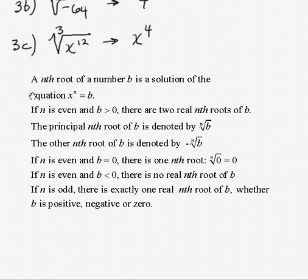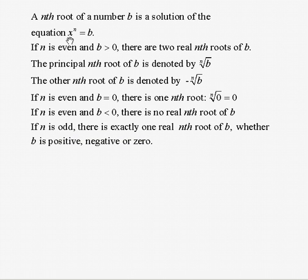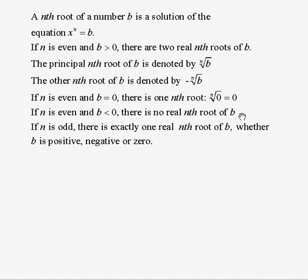Let's look at vocabulary for nth roots. The nth root of a number is the solution to x to the n equals b. If n is even and b is greater than 0, there are two real roots — the principal one, which is positive, denoted by the nth root of b, and its opposite. If n is even and b equals 0, there's only one root, which is 0. If n is even and b is less than 0, there is no real root — so there's no square root, fourth root, sixth root, or any even root of a negative number. If n is odd, there is exactly one nth root of b, whether b is positive, negative, or zero.